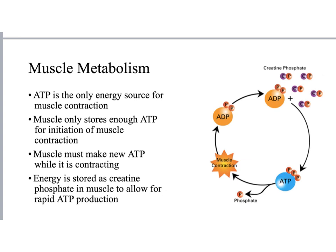Let's switch gears and talk briefly about muscle metabolism. We talked about glycolysis and cellular respiration and how the body makes ATP from glucose - that's also true in muscle. Muscle breaks down glucose through glycolysis, especially in red muscle, and produces ATP. The problem is that ATP is used up rather quickly and cannot be made fast enough to sustain contraction.